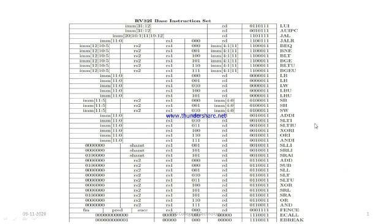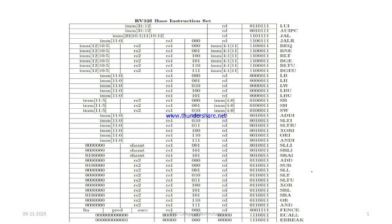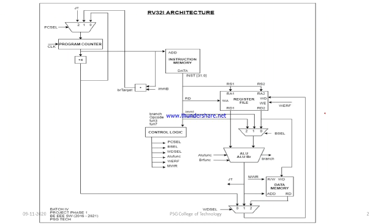In this video we are going to see about the RV32I base integer architecture. In the previous video we discussed about the types of instructions and the number of instructions implemented in this project. The architecture consists of five stages: fetch, decoding, memory execution or effective address calculation, memory access, and write back into the register file.